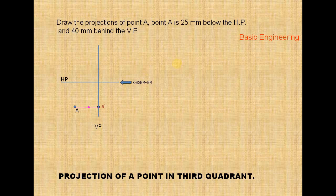This is the front view of point A. A-dash represents the front view of point A — you get the front view on the vertical plane and you get the top view on the horizontal plane like this, but we have to rotate the horizontal plane.